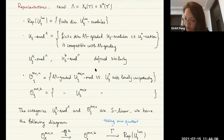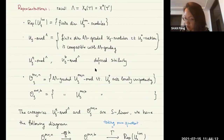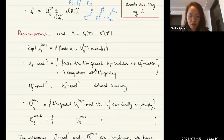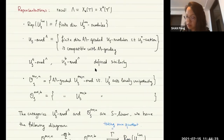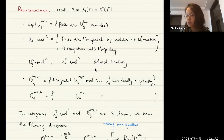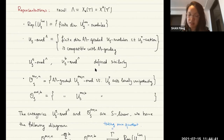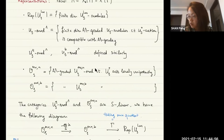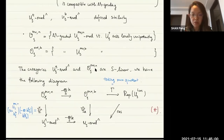For the deformed algebras U_ζ^T and U_ζ^B, one can define lλ-graded modules with finite generation over the base rings. For the mixed form U-mix-n, one defines category O: lλ-graded modules where the positive part acts locally nilpotently, as in the usual category O construction. Standard objects include baby Verma modules, Verma modules, and Weyl modules, and one can study functors between these categories.